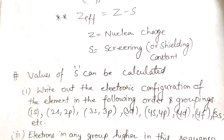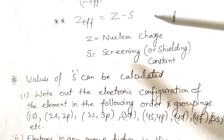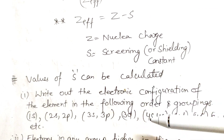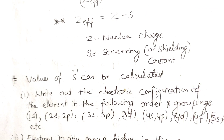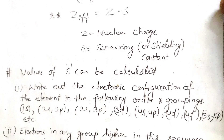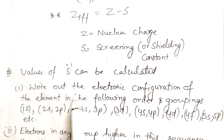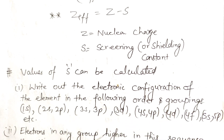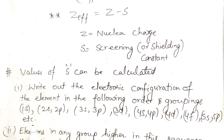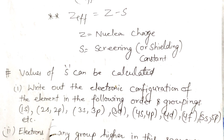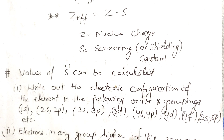The value of S can be calculated by the following steps. First, we write out the electronic configuration of the element in the following order and groupings: 1S, then 2S and 2P together, then 3S and 3P, then 3D, then 4S and 4P, then 4D, then 4F, then 5S and 5P, and so on.